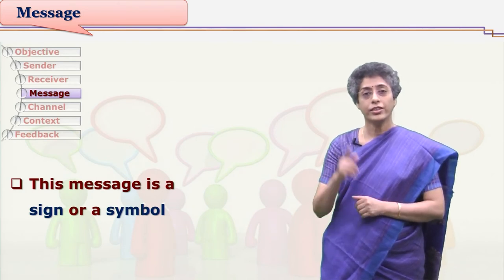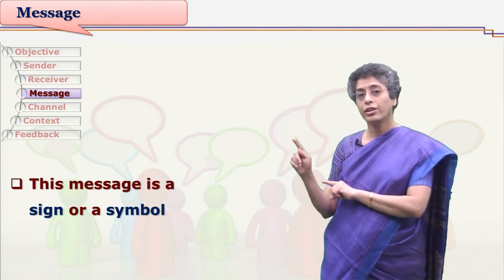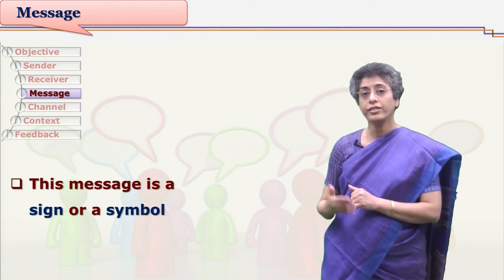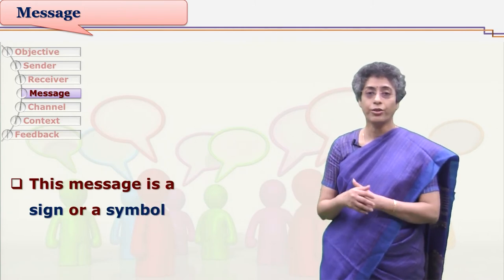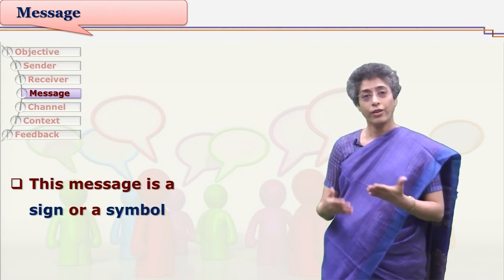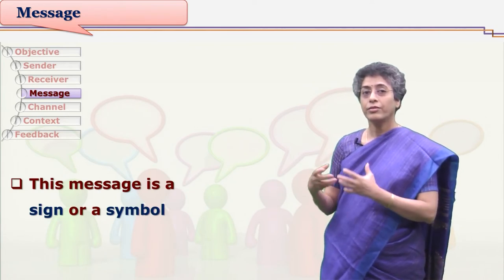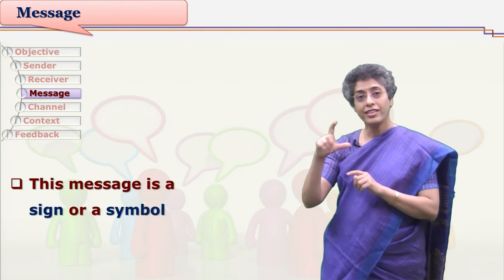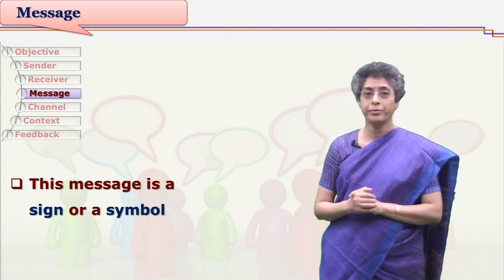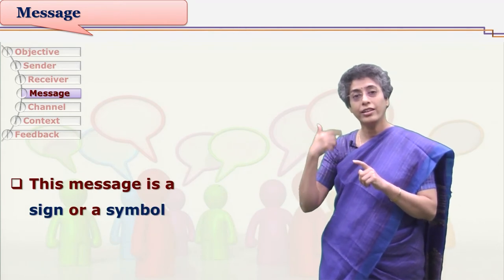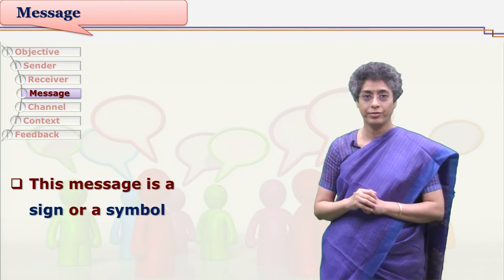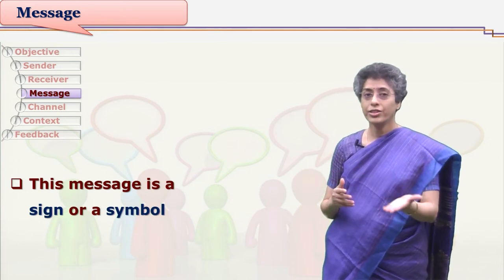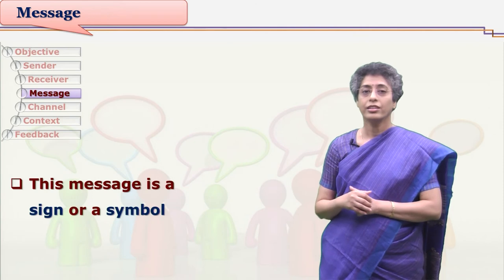The responsibility of the sender is to understand the set of signs and symbols known by receivers and use exactly the same signs. If receivers are not understanding the signs of the sender, there cannot be communication. To communicate with hearing-impaired persons, special signs are used — perceived by the hearing-impaired person because they cannot listen and understand verbal messages. If the sender uses the same signs which the receiver knows, communication is always effective.